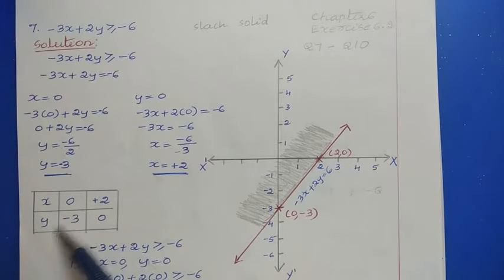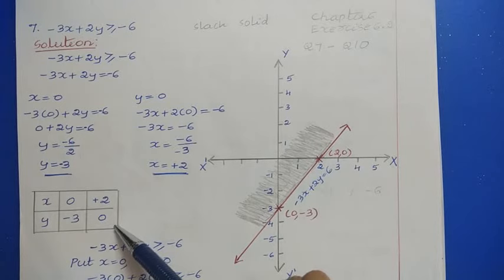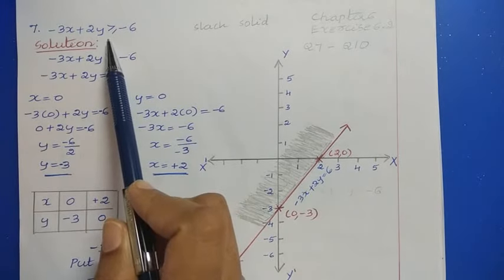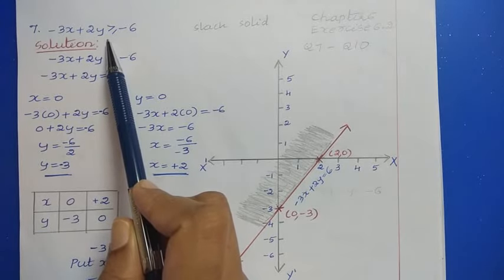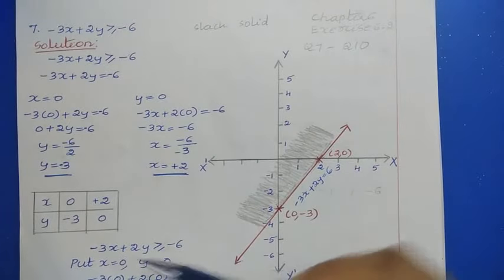So we got two solutions: (0, -3) and (2, 0). Now we can draw a straight line on the plane. First check whether to use a solid or dotted line. Since the inequality has ≥, which is a slack inequality, we use a solid straight line.